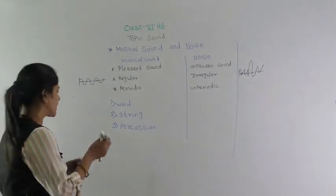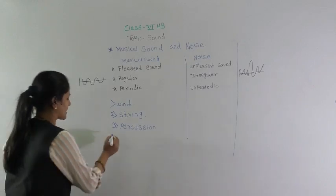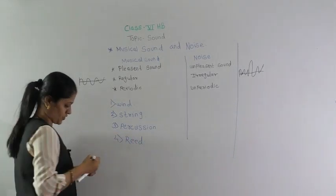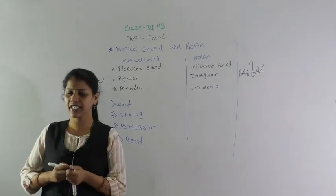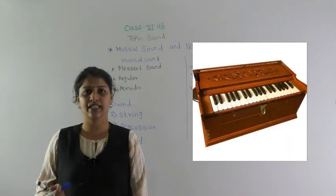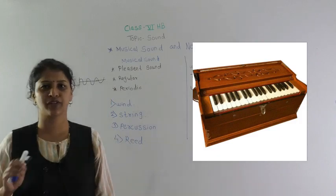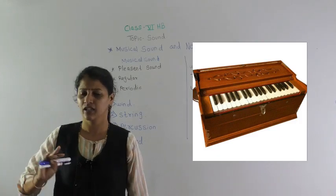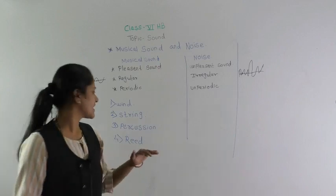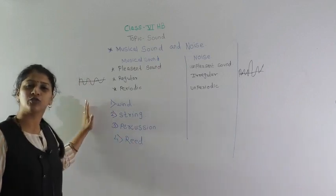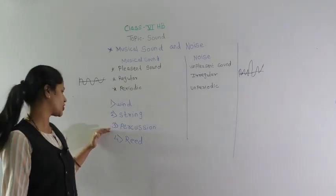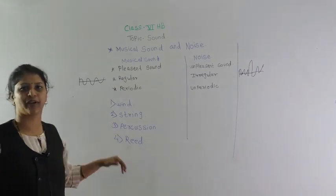The last is the reed instrument, for example the harmonium, where vibrations are produced with our fingers. So these are the four types of musical instruments: wind, string, percussion, and reed.